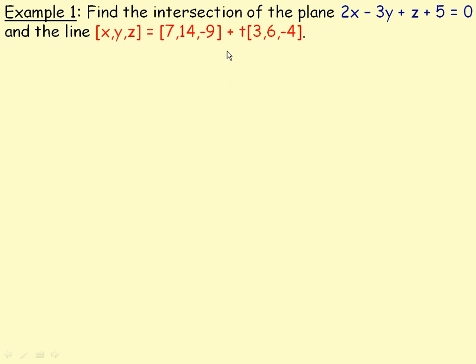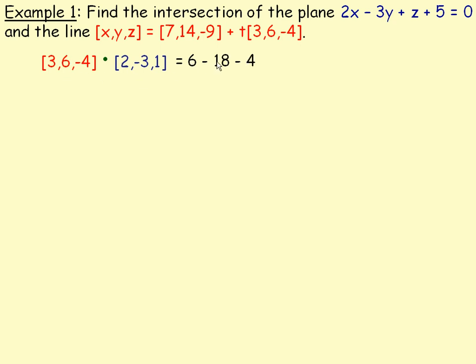In the first example, we need to find the intersection of a given plane with a given line. The test to determine whether we have a unique solution is to take the direction vector for the line and the normal vector for the plane, and find the dot product of them. So 3 times 2 is 6, plus 6 times negative 3 is negative 18, plus negative 4 times 1 is negative 4, and that works out to be negative 16.